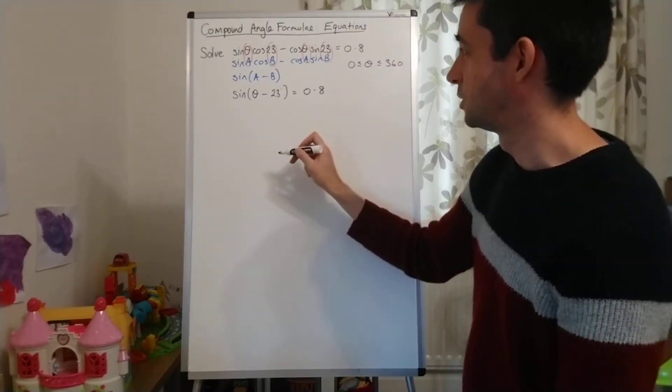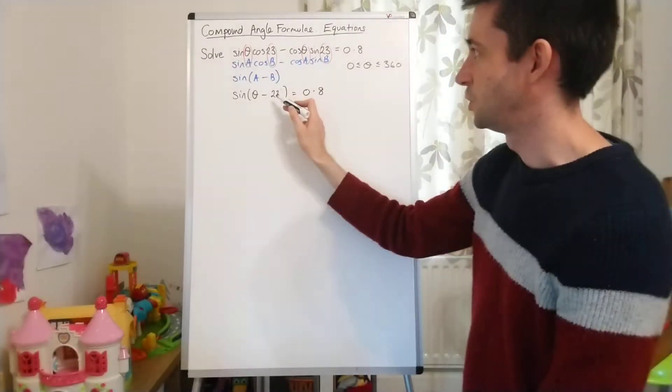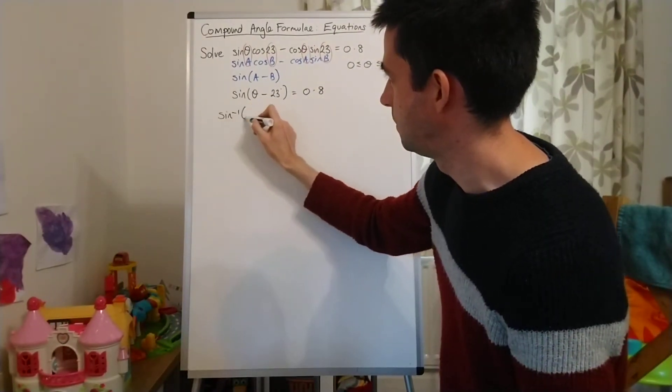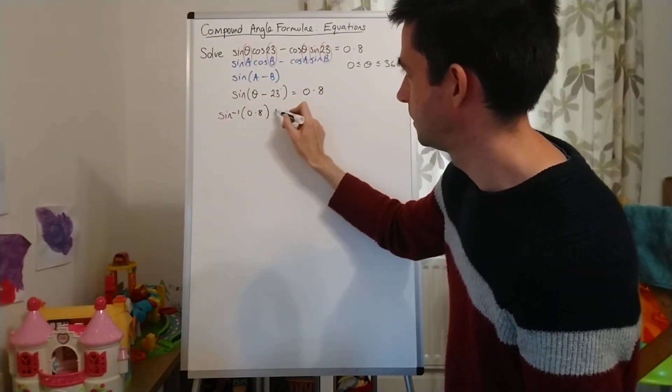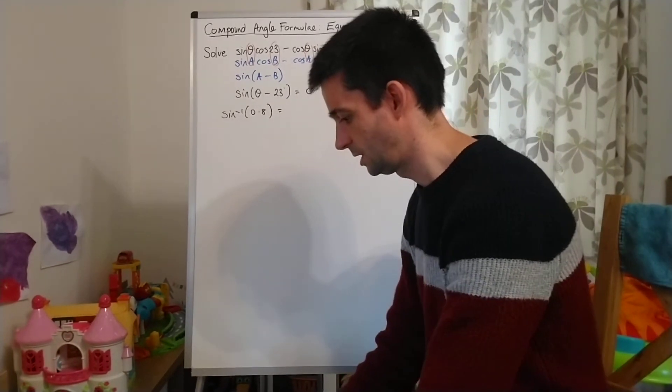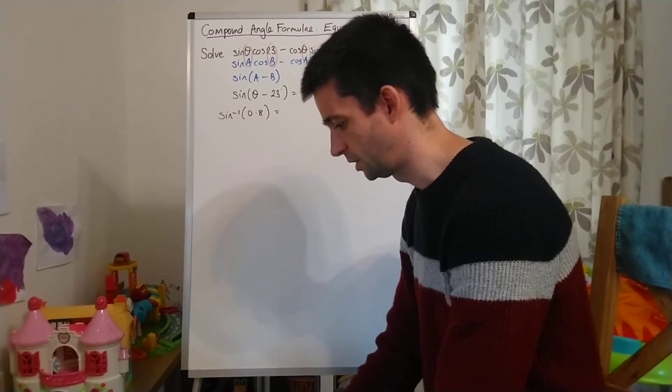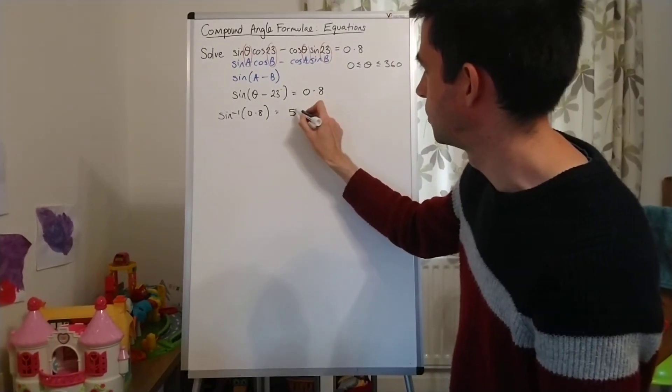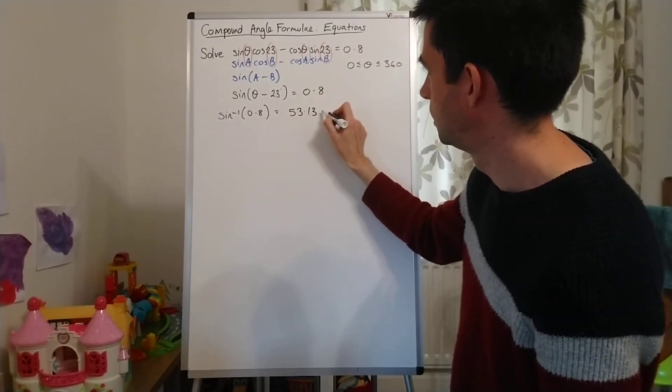So, let's solve it through then. So, sin in a bracket, theta minus 23 equals 0.8. Sin inverse of 0.8 on the calculator, making sure, of course, that you're in degrees mode, comes out as 53.13.